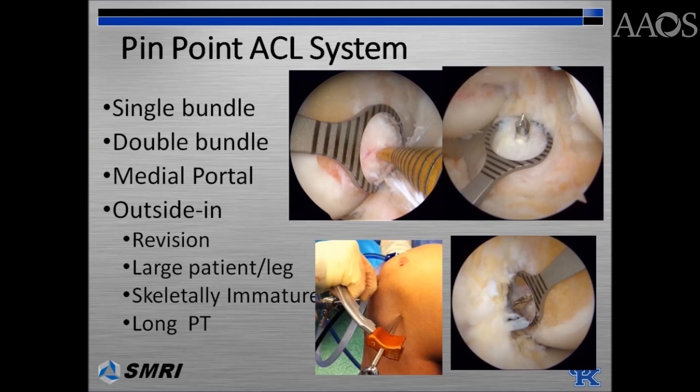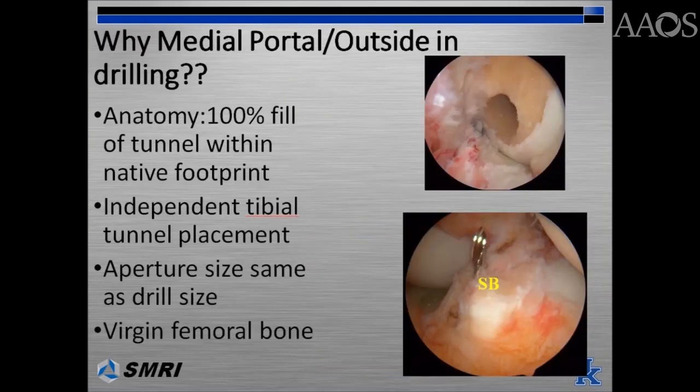An anatomic ACL system can be used in a variety of techniques including single bundle, double bundle, medial portal, and outside-in ACL reconstruction. The authors recommend using outside-in ACL reconstruction in the revision setting, for patients with a large leg, for skeletally immature patients, and in patients with a long patellar tendon to avoid graft-tunnel mismatch. Medial portal and outside-in drilling allow for 100% of the tunnels to be within the native ACL footprint.